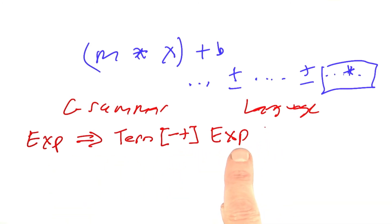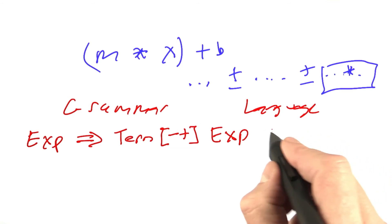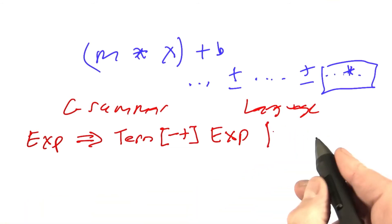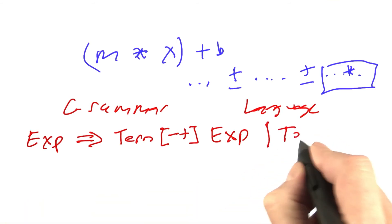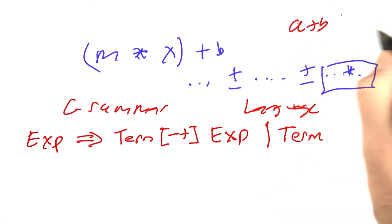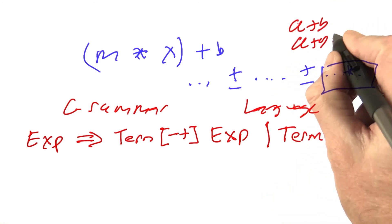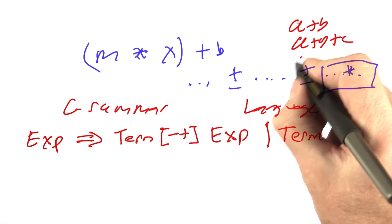But that's recursive and I need a base case, so I can say it can also be the case that an expression can consist of a single term. A plus B is an expression, A plus B plus C is an expression, and also just A. That's the rule for expression.